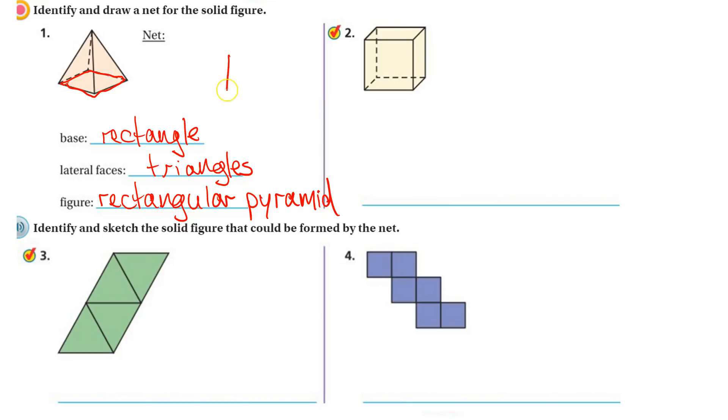And then its net would be that square or rectangle at the bottom with triangles coming off of each of the edges. So triangle coming off that edge, triangle coming off this edge, triangle coming off this edge, and a triangle coming off this edge, something like that.